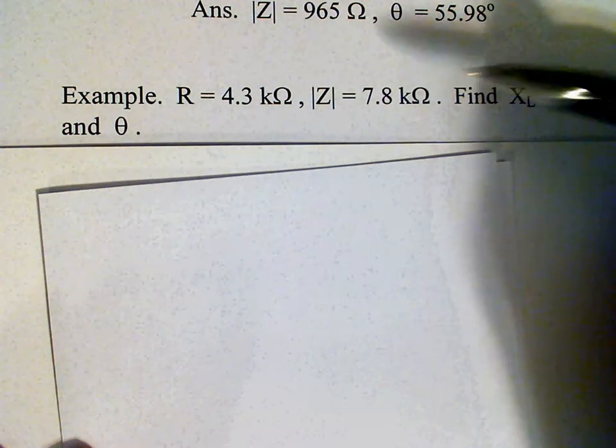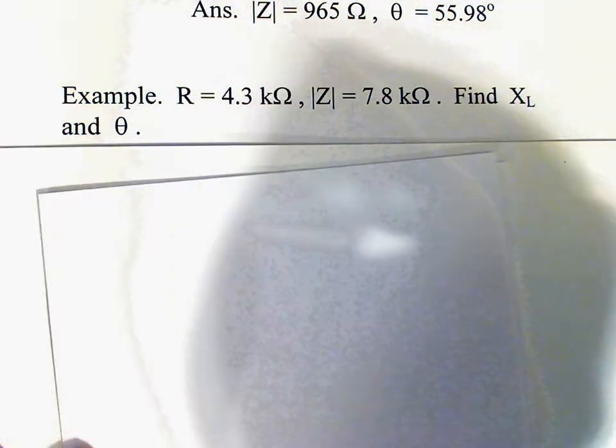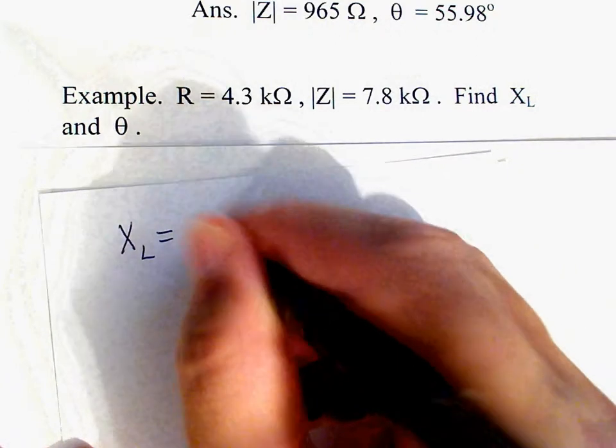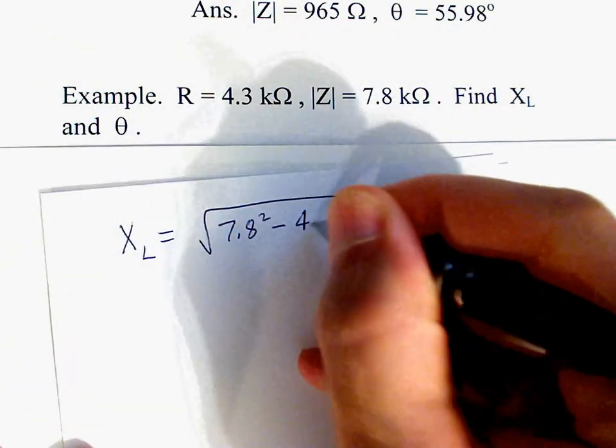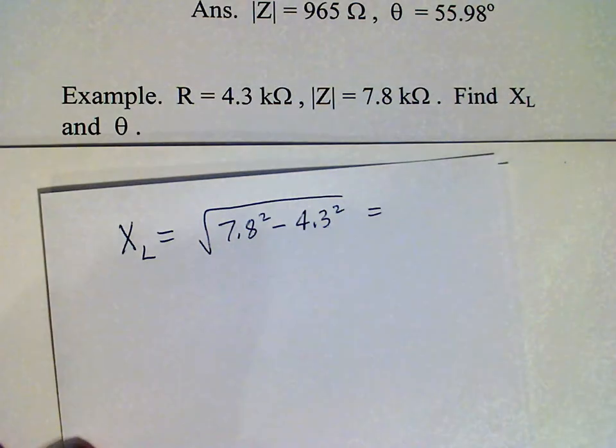Okay, so this time, since we're given the value of the impedance, we need to do square root difference of the squares. XL is 7.8 squared minus 4.3 squared.